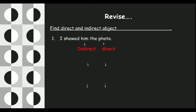Next question: 'I gave the book to Ami.' I gave what? — I gave the book. I gave to whom? — I gave to Ami. When the answer comes from asking 'what', it will be direct object. When the answer comes from asking 'whom', it will be indirect object. So 'the book' is the direct object and 'Ami' is the indirect object.